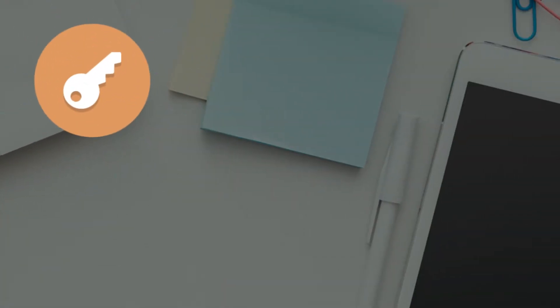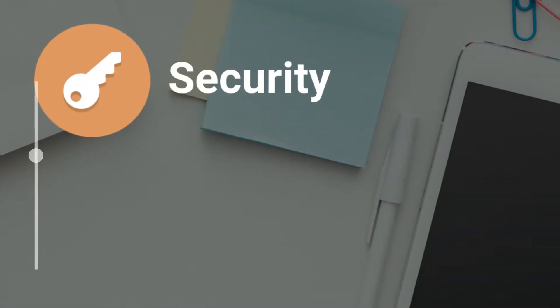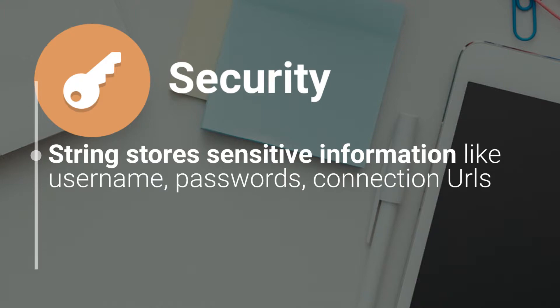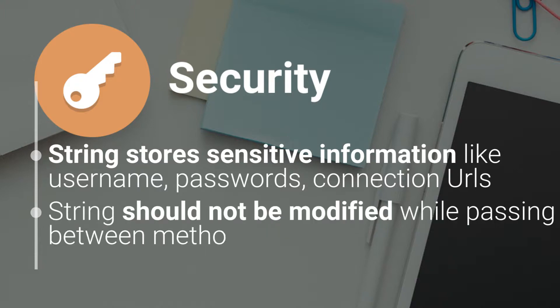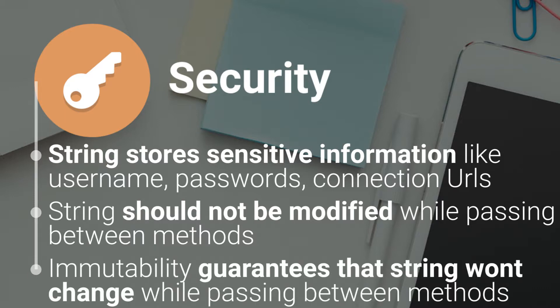Second, security. The string is used extensively to store sensitive pieces of information like usernames, passwords, connection URLs, etc. Hence securing string is crucial to make sure that when sensitive data is passed between different methods, it's not modified. With immutability, it's easier to operate with sensitive code because values don't change and there are fewer interleavings of operations that might affect the results.